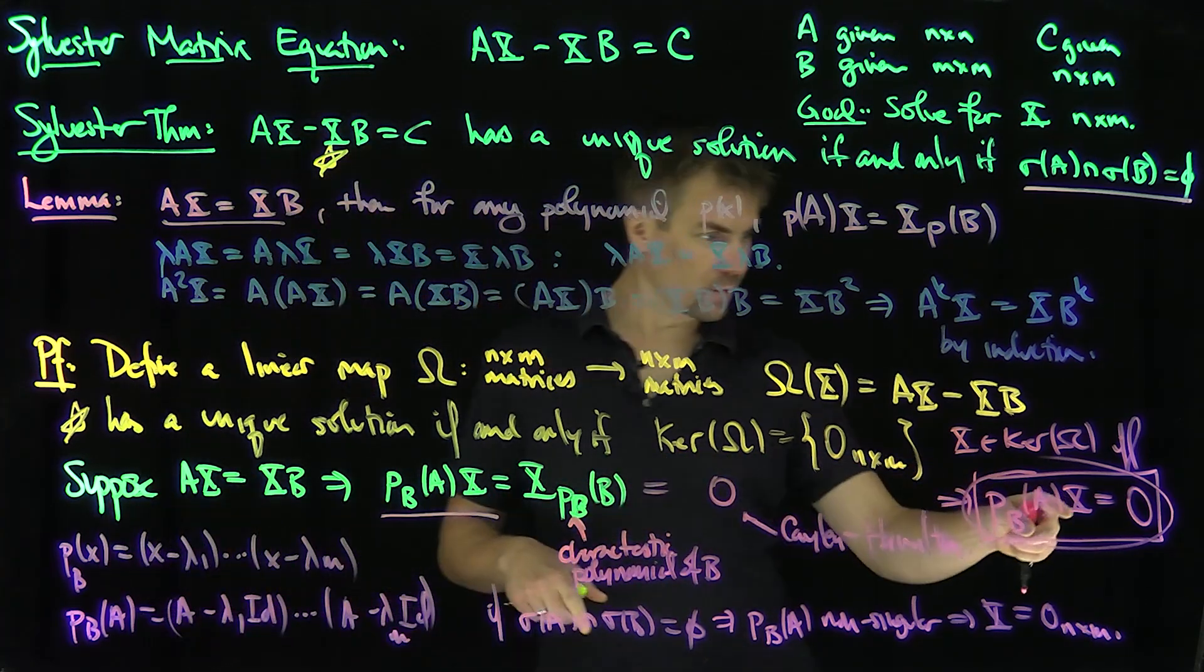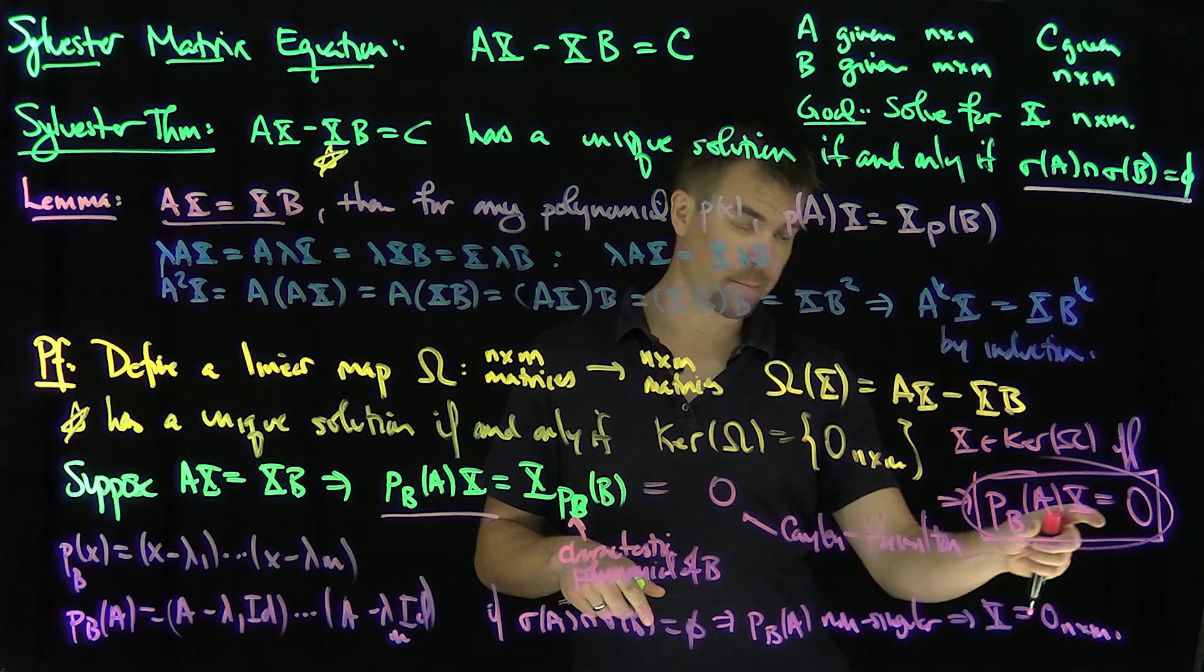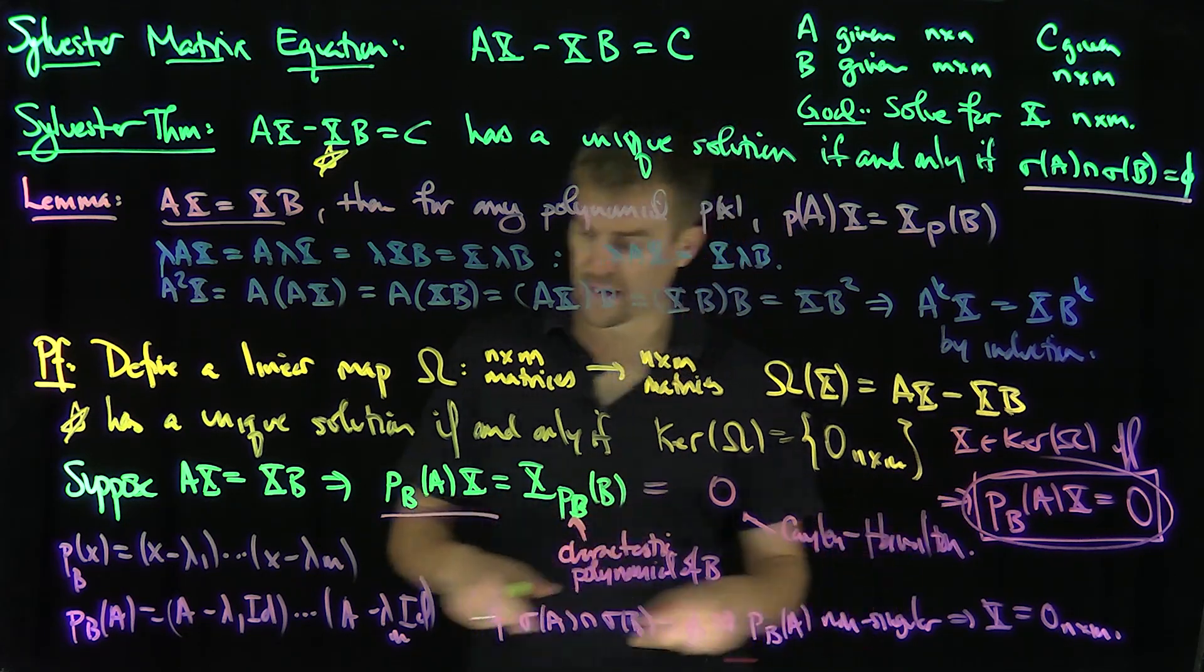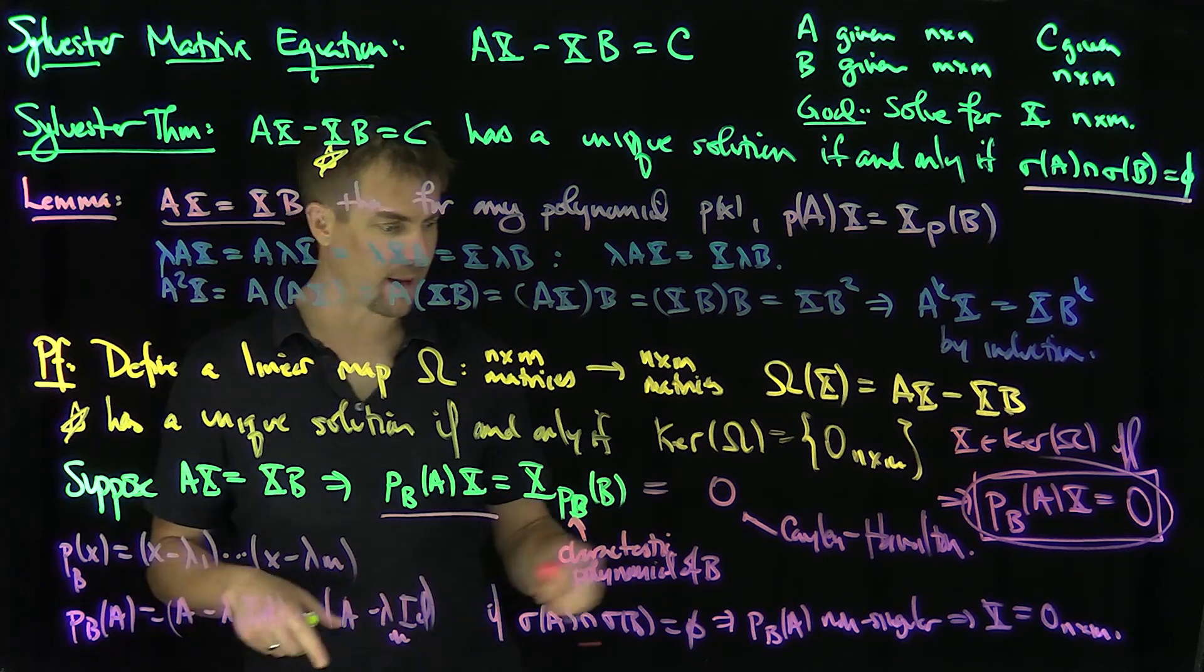that would say that A and B, there are non-trivial solutions to this. There are non-trivial solutions to this boxed equation if and only if this matrix p_B(A) is singular. And that happens if and only if the spectrum is overlapping.